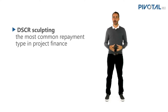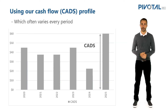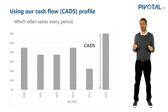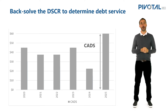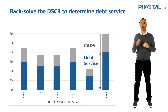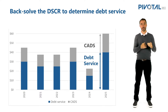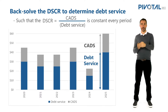DSCR sculpting is by far the most common form of project finance repayments. In this case, what we're going to do is use the DSCR equation — DSCR equals CAD divided by debt service — and back solve our principal and interest calculations such that our cash flows and our debt service follow and are matched to each other.